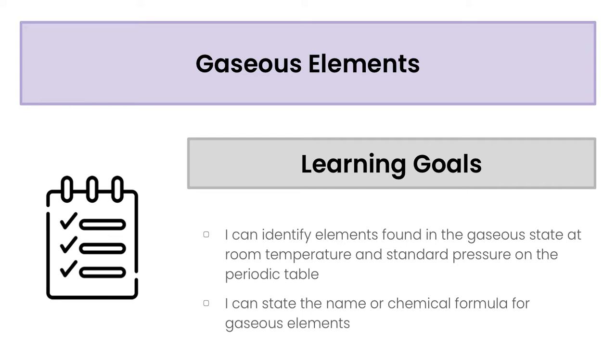First we're going to look at identifying elements found in the gaseous state at room temperature and standard pressure on the periodic table. So we're going to find which elements are gases at room temperature and standard pressure, and then we're going to look at naming as well as the chemical formula for those gaseous elements.